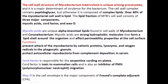This lipid shell prevents the attack of mycobacteria by different cationic proteins or enzymes like lysozyme and oxygen radicals. The shell helps prevent any interaction or damage by proteins, lysozymes, or oxygen free radicals. It also protects extracellular mycobacteria from complement deposition in the serum and helps block the opsonization process.